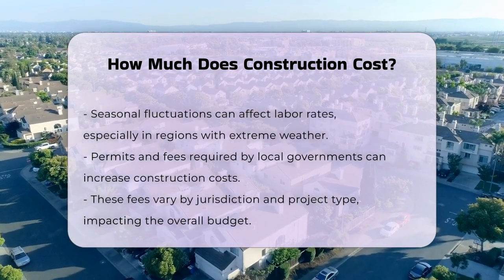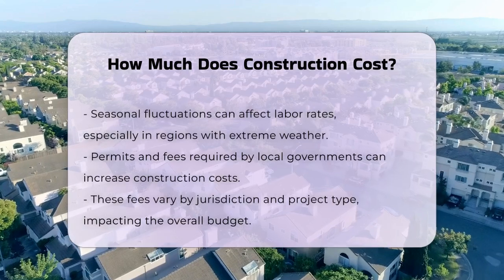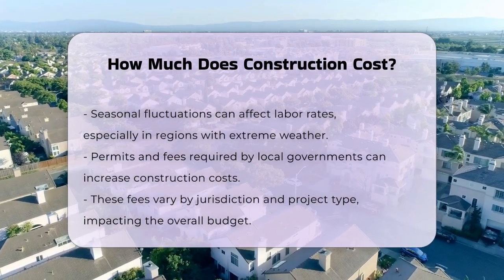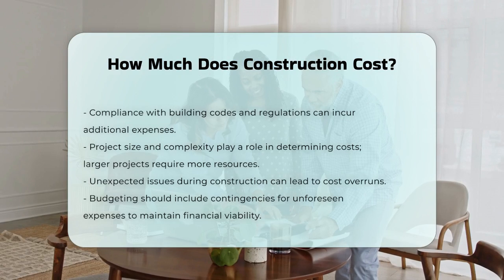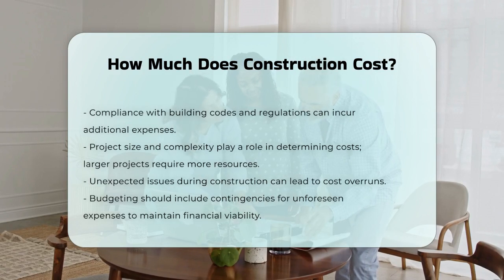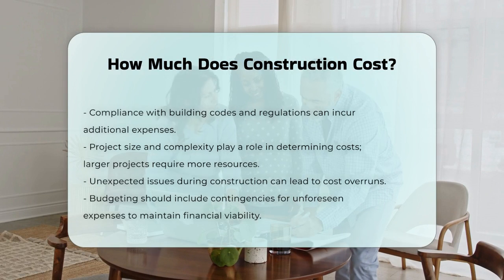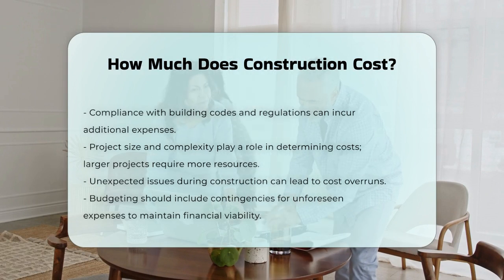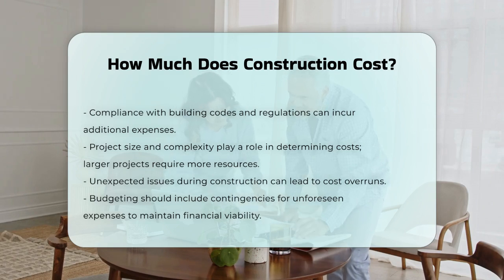Moreover, the project size and complexity can influence costs. Larger projects typically require more resources and time, leading to increased expenses. Unexpected issues during construction can also result in cost overruns. Budgeting for construction should include contingencies for unforeseen expenses — this practice helps ensure that projects remain financially viable even when challenges arise.